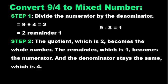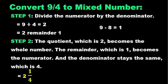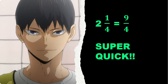The remainder which is 1 becomes the numerator, and the denominator stays the same which is 4. So 9 over 4 is equal to 2 and 1 fourth. And done! 9 over 4 simplified to a mixed number is 2 and 1 fourth.